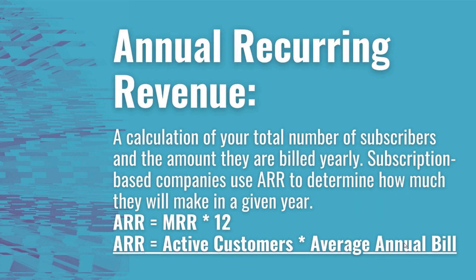When you're looking at ARR — Annual Recurring Revenue — it's just your Monthly Recurring Revenue times 12. You can also use quarterly recurring revenue, which is not as popular but gives you a slightly better expectation for your annual recurring revenue. ARR is a calculation of your total number of subscribers and the amount they are billed yearly on average.